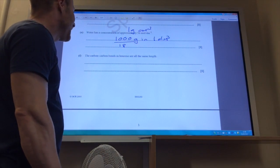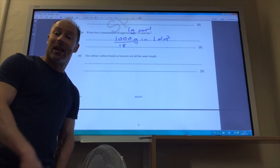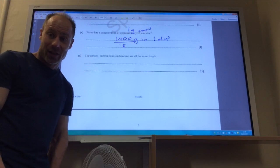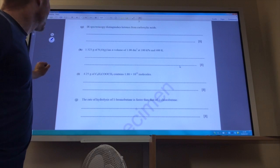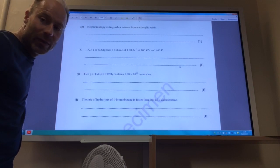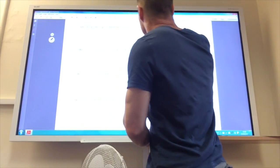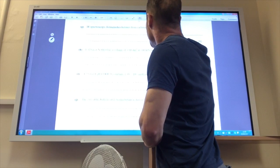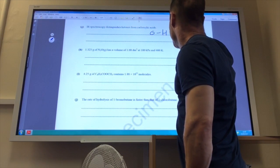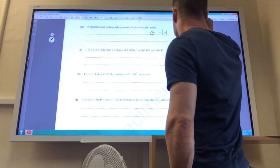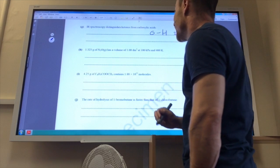The carbon-carbon bonds in benzene are all the same length. That's because the pi bonds in benzene are delocalised across the six carbon-carbon bonds. IR spectroscopy distinguishes ketones from carboxylic acids. That's because in a carboxylic acid, you also have the OH, very broad absorption between 2,500 wavenumbers to 3,300 wavenumbers, which you do not see for ketones.